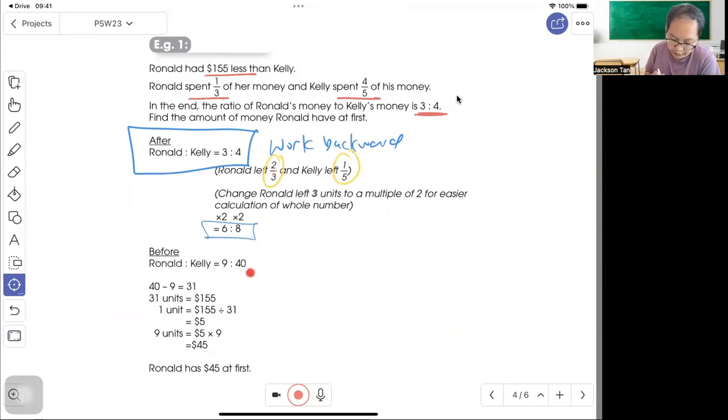With the ratio you can work out. The $155 will be 40 minus 9, which is 31 units. So 31 units is $155, 1 unit is $5, and 9 units is $45.